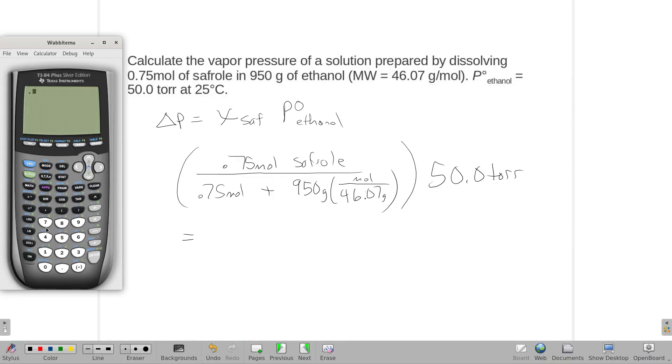So 0.75 divided by, in parentheses, 0.75 plus, I'll do another set of parentheses, 950 divided by 46.07. Close both sets of parentheses. That should be my mole fraction, and I'm gonna multiply that by the 50.